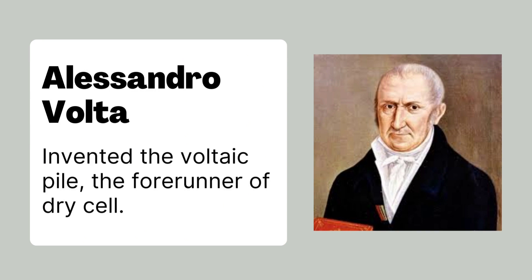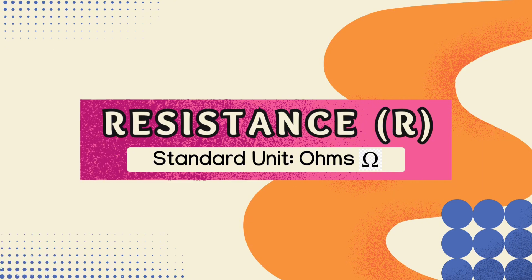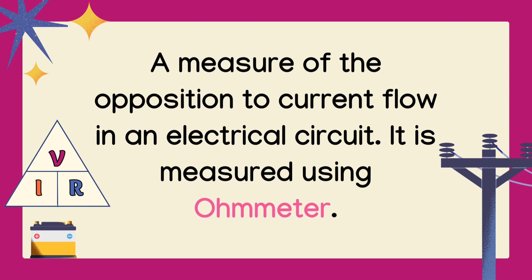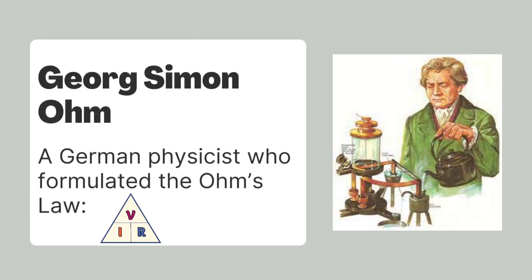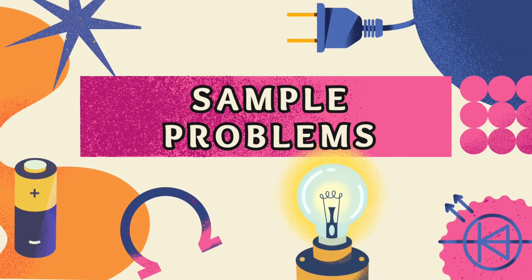Third is resistance, symbolized by capital letter R. Its standard unit is ohms. Resistance is a measure of the opposition to current flow in an electrical circuit. It is measured using the device called ohmmeter. The unit for resistance was named after George Simon Ohm, a German physicist who formulated Ohm's law — the relationship between voltage, current, and resistance.